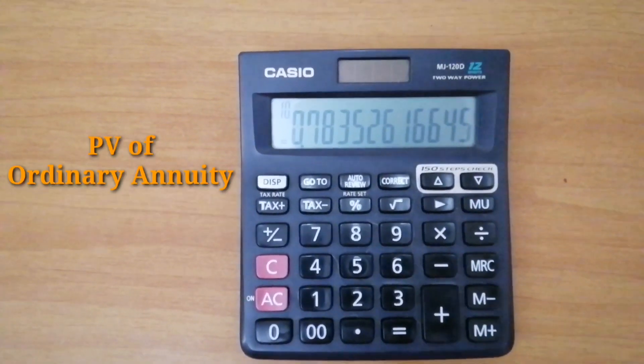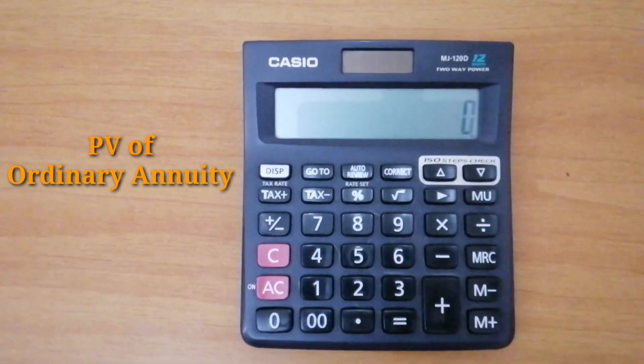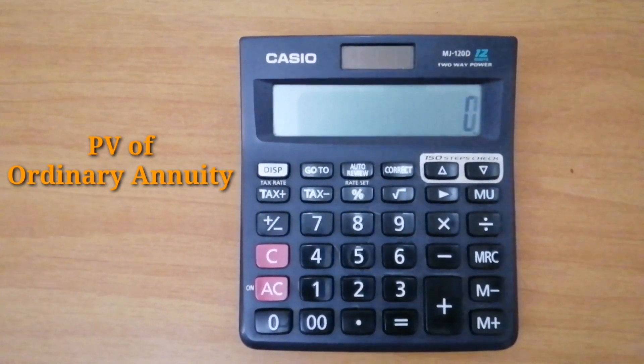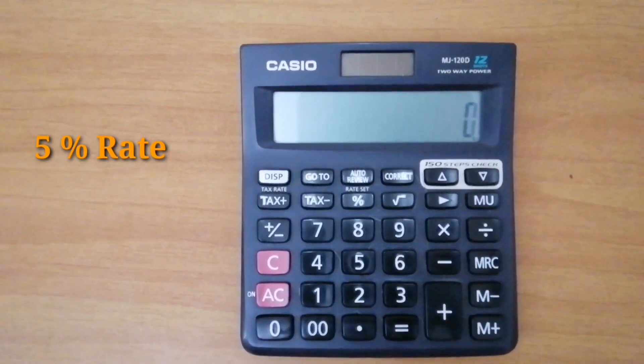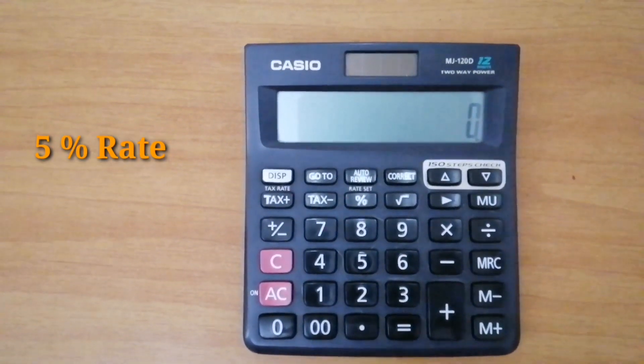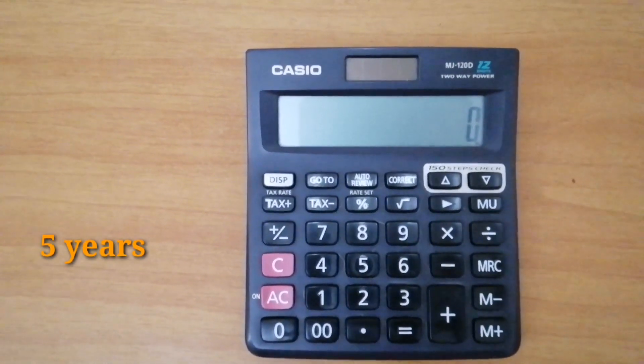Now, present value of ordinary annuity. First is let's do the same. So, the rate is 5% and then 5 years.